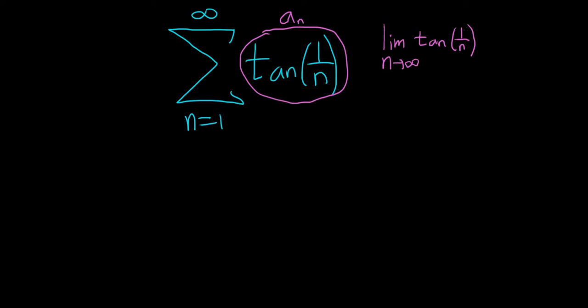So when we take this limit, the 1 over n inside the tangent function will approach 0. This is equal to the tangent of 0, which is equal to 0. So the nth term test does not work. It fails.